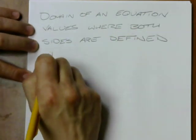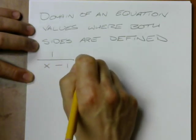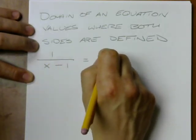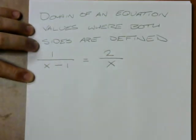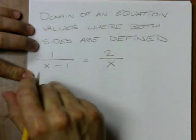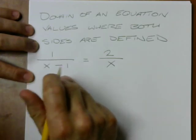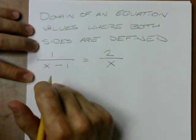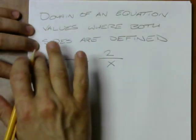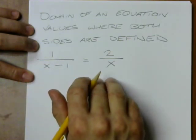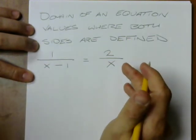For example, if I have something like 1 over x minus 1 equals 2 over x, this equation is not defined when, say, x equals 0. This equation is not defined when x equals 1. So it's not defined for those two values. Any other number I can plug in.